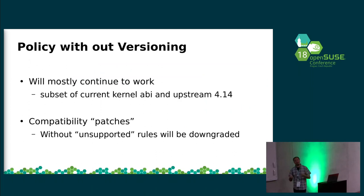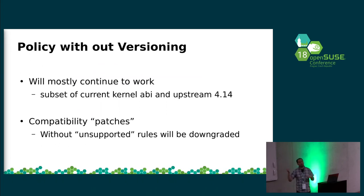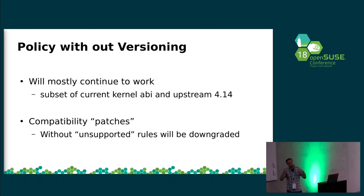We have a lot of policy out there that isn't versioned — what happens with those? They're going to have the compiler look at the kernel version or ABI and also look at a static 4.14 ABI set, taking a subset of those. That's the lock-down point: unversioned policy can't use features beyond what's supported in 4.14. That's the set point we're choosing.